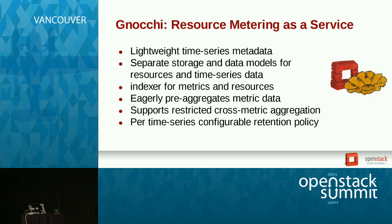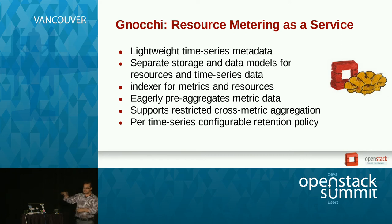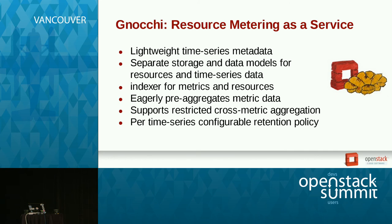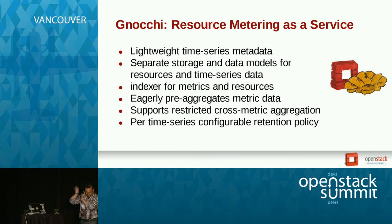Gnocchi has a storage component and an indexer. The storage handles time-series data — by default we have something called Carbonara, which is a Swift plus pandas-based canonical implementation. There are also patches to support InfluxDB and OpenTSDB. The indexer stores all the resource information and maps resources to metrics, while the measurements live in storage. You add measurements to the metric. This way you handle the right type of data with appropriate tools, rather than using one giant tool like Mongo or MySQL for everything as in Ceilometer.